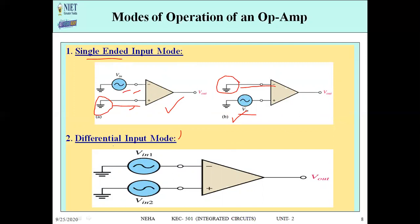The next one is differential input mode. In differential input mode, we have two inputs applied to the OPAM — V-in-one and V-in-two — but they are different potentials on both terminals. This produces the difference of both amplified signals. So when both terminals have different voltages provided, the OPAM is said to be working in differential input mode.